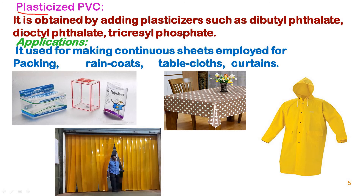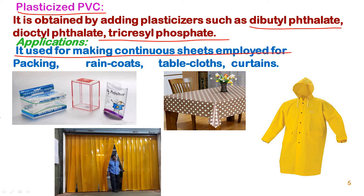Plasticized PVC is produced by adding plasticizers such as dibutyl phthalate, dioctyl phthalate, and tricresyl phosphate. Addition of these plasticizers imparts elastic properties to PVC, so it can be stretched and converted into continuous sheets.